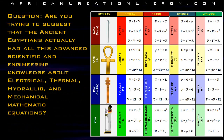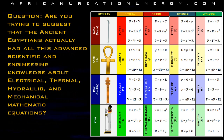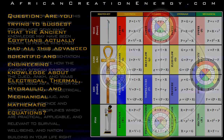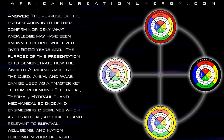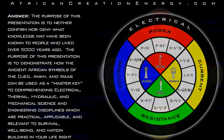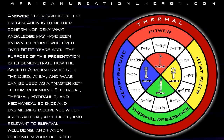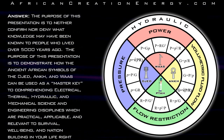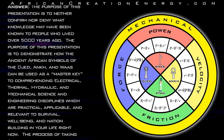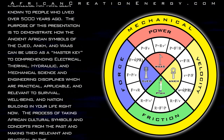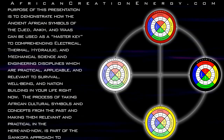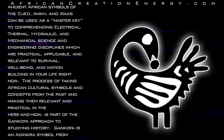Question: Are you suggesting that the ancient Egyptians actually had all of this advanced scientific and engineering knowledge about electrical, thermal, hydraulic, and mechanical mathematical equations? Answer: The purpose of this presentation is to neither confirm nor deny what knowledge may have been known to people who lived over 5,000 years ago. The purpose is to demonstrate how the ancient African symbols of the Jed, Ankh, and Was can be used as a master key to comprehending electrical, thermal, hydraulic, and mechanical science and engineering disciplines which are practical, applicable, and relevant to survival, well-being, and nation-building in your life right now. This process of taking African cultural symbols from the past and making them relevant in the present is part of the Sankofa approach to studying history.